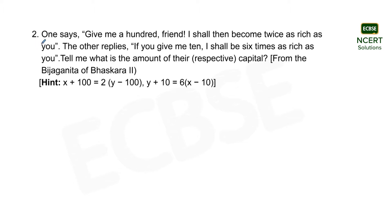The question second involves a conversation between two people. One says, 'Give me a hundred friends, I shall then become twice as rich as you.' The other replies, 'If you give me ten, I shall be six times as rich as you.'